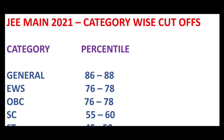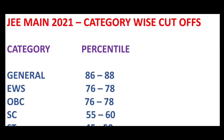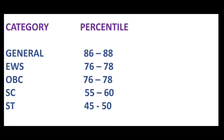Here are the cutoff percentiles for various categories of students. A General category student requires the percentile range between 86 and 88. An EWS category student should get the percentile range between 76 and 78. Similarly, an OBC category student should also get the percentile range between 76 and 78. An SC category student needs the percentile between 55 and 60, whereas an ST category student needs the percentile between 45 and 50.